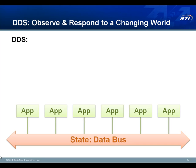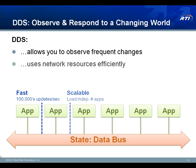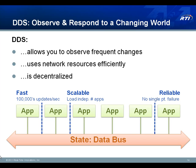DDS, in contrast, allows you to observe frequent changes to the world of interest and uses network resources very efficiently — on wide area networks as well as local networks. On local networks in particular, DDS can take advantage of multicast so that the load on the network is independent of the number of applications. You can have hundreds of applications accessing the same data using the same level of resources as a single application would. And DDS has a decentralized topology so that a failure in any particular application doesn't take out the whole network. DDS communications are also governed with explicit quality of service that allows you to manage and monitor which applications are able to communicate with the data bus and with each other.